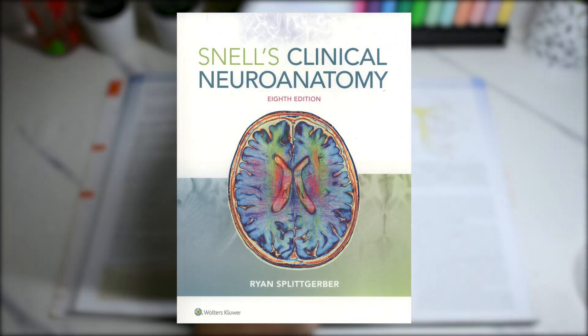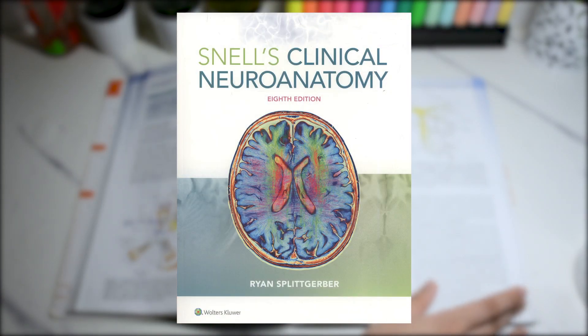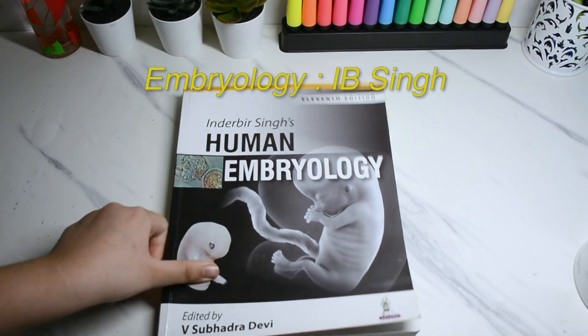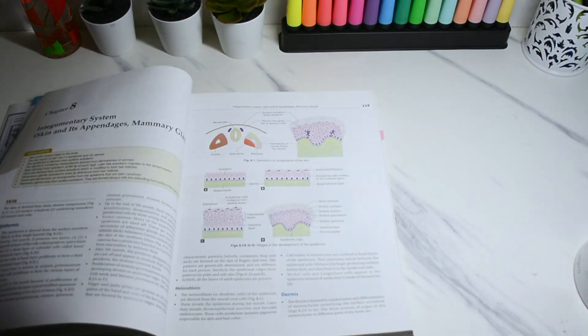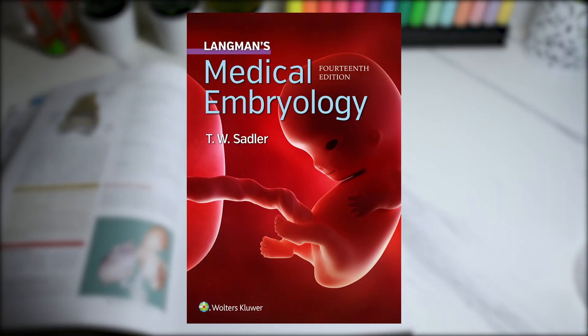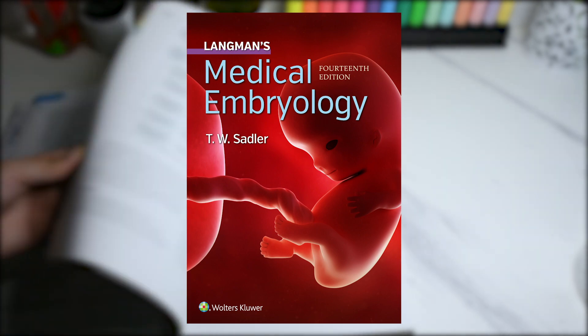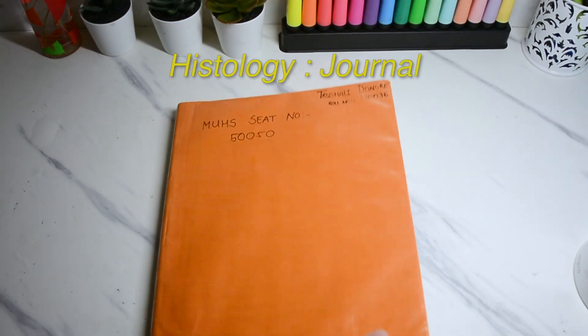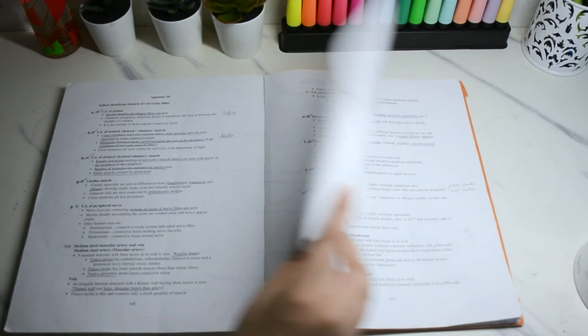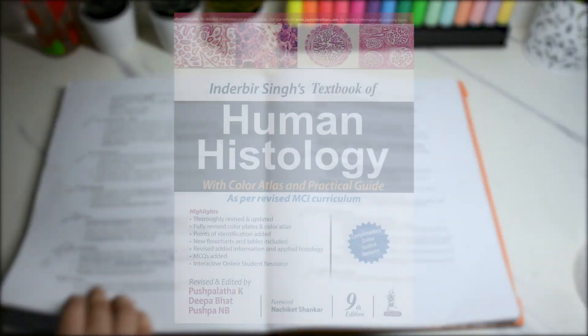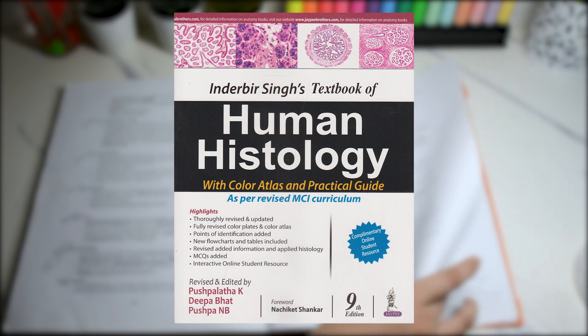For embryology I used IB Singh. It is the standard for first year. Langman's has more clinical stuff and molecular technicalities which are not really required for UGs. For histology I did not use any special textbooks since the journals provided to us were good enough for practical exams. A book people use is by IB Singh.